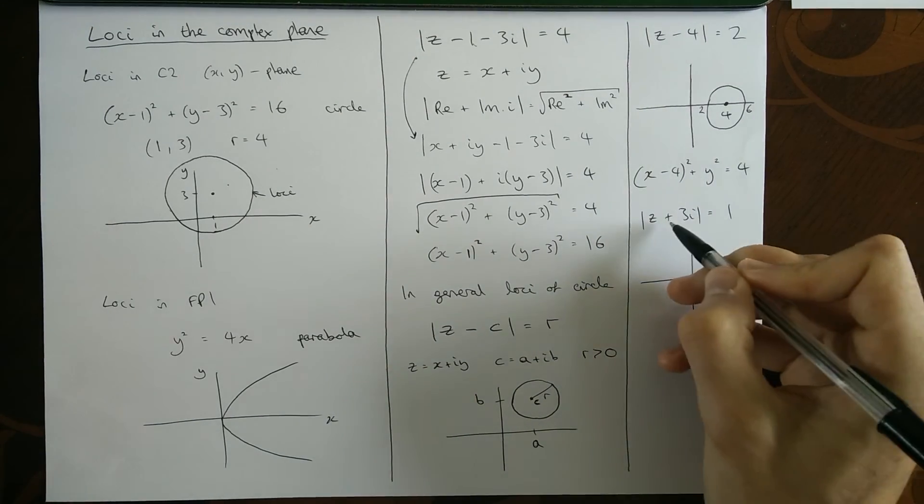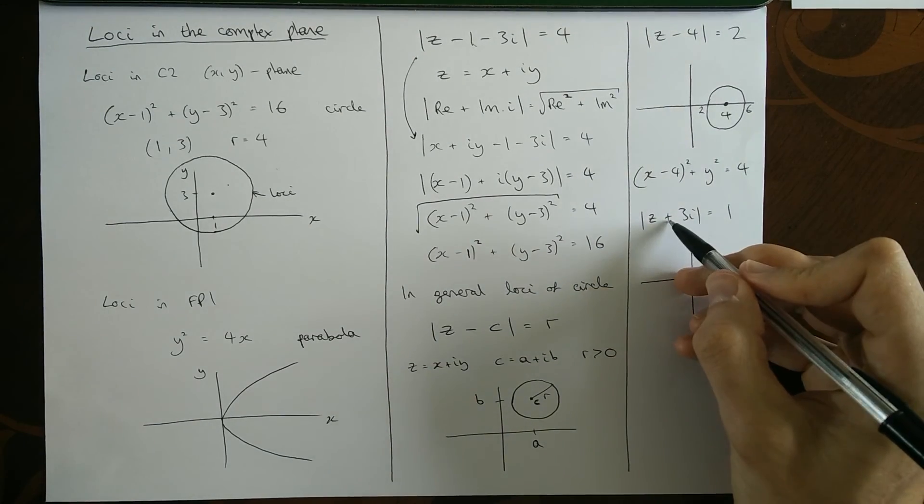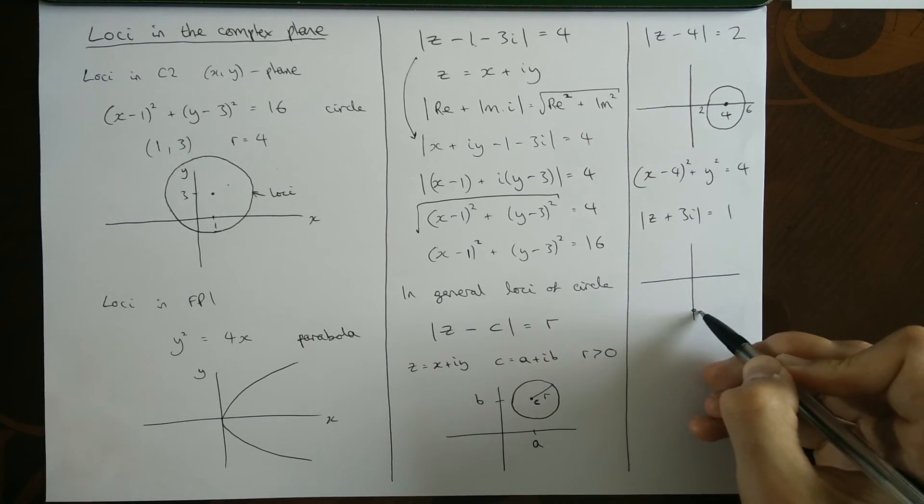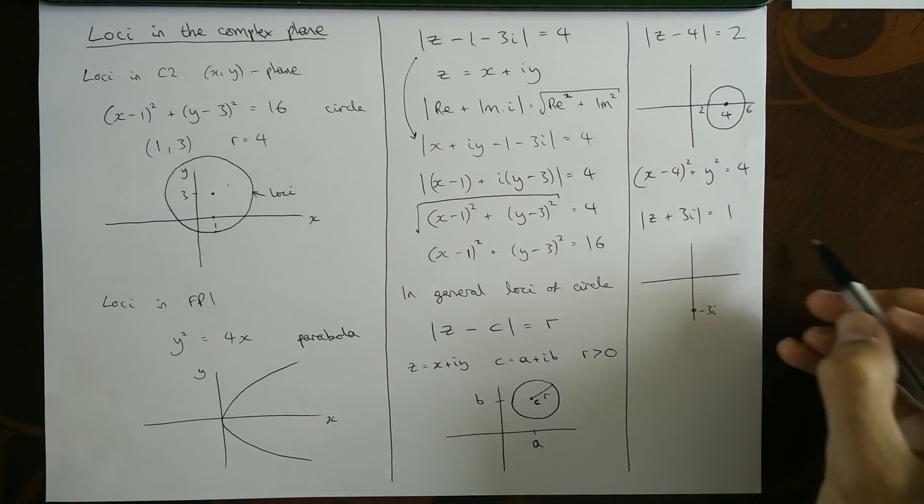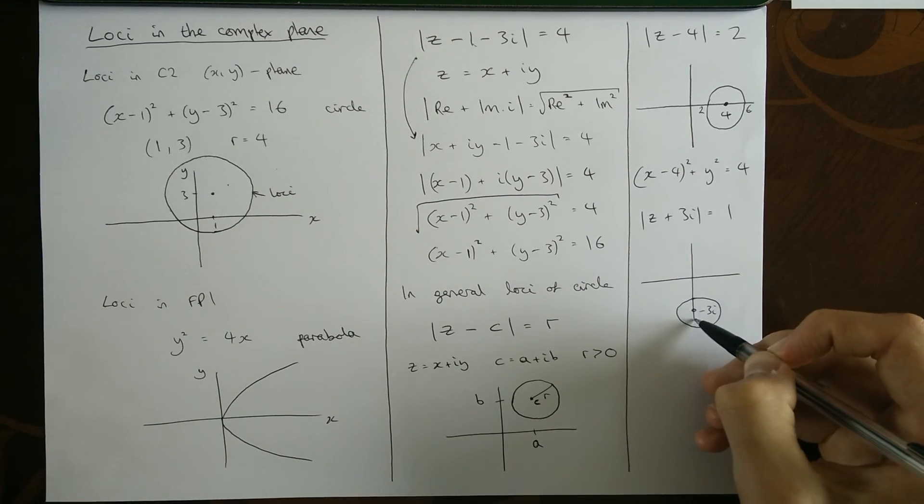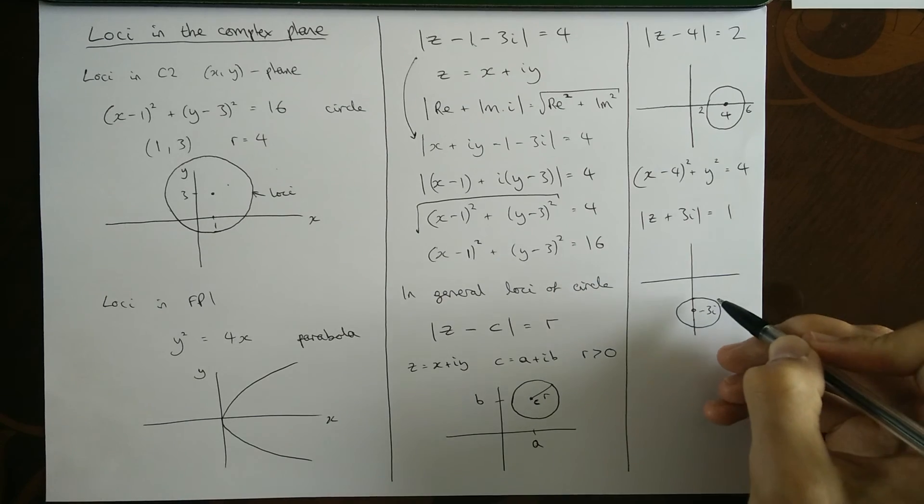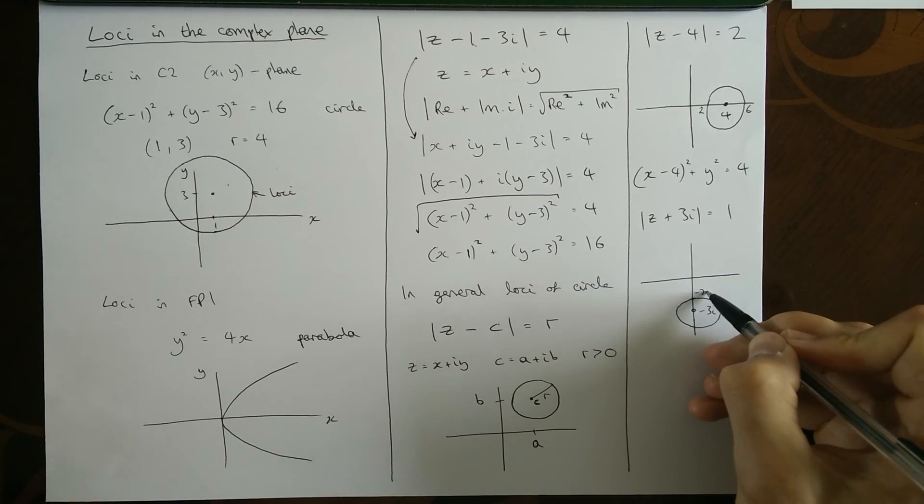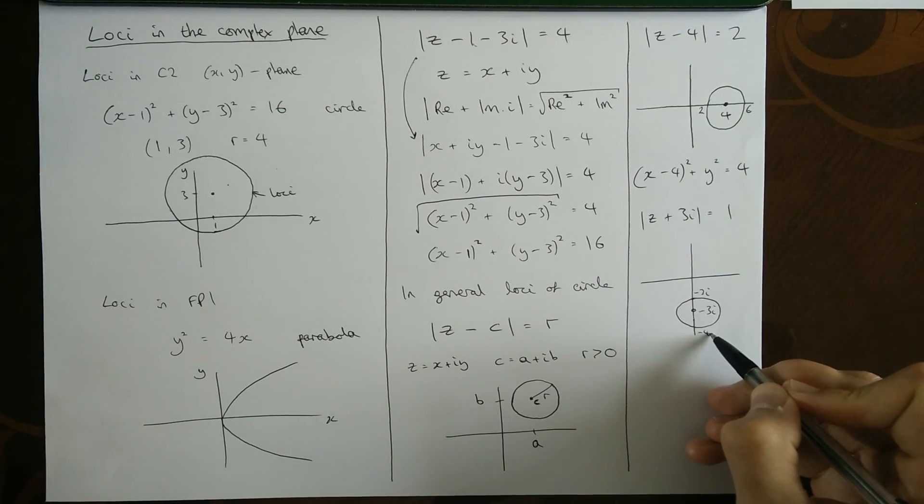z plus three i equal to one. This time we're looking at three i. Okay, but because it's plus three i, we want the minus three i. This being our centre. Our radius is one. So we draw a tiny little circle. I'm just going to draw it slightly around that. So I don't go through my number. One, so it goes through here at minus two i and down here at minus four i.